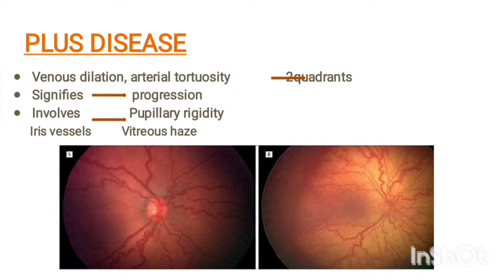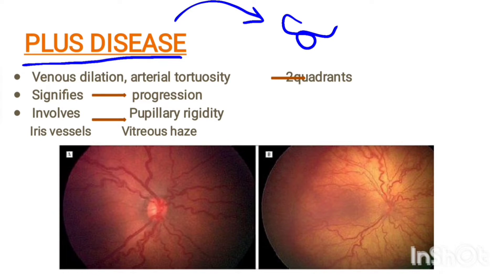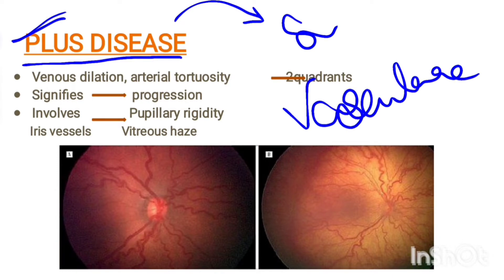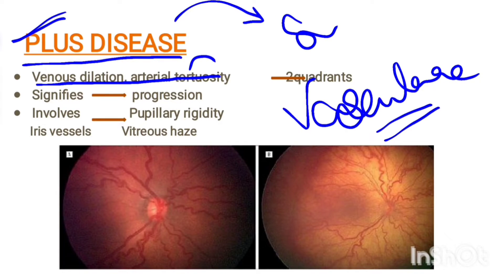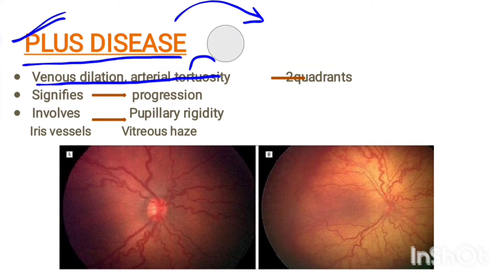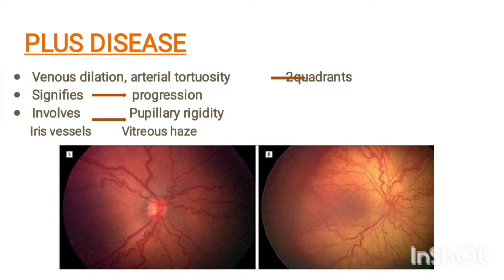Plus disease describes the vasculature — how severe the vasculature involvement is. This is very important for the treatment basis. The vasculature will show venous dilatation and arterial tortuosity: arteries will be tortuous and veins will be dilated. It should involve at least two quadrants, and it signifies disease progression.